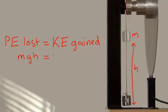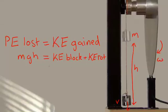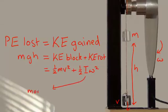However, on the right-hand side, we now have the kinetic energy of the block, plus the kinetic energy of the rotating disc. If the speed of the block is v, and the disc's angular velocity is omega, then the right-hand side is half mv squared, plus half i omega squared, where i is the moment of inertia of the disc about its centre.